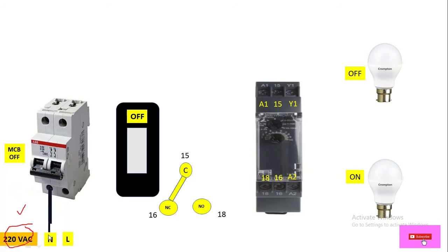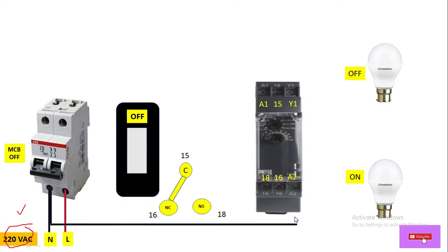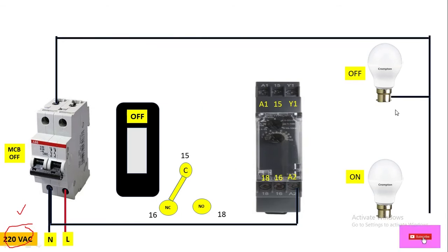From the supply, let's connect neutral to the input terminal of the double-pole MCB, and the live phase terminal is connected to the other input terminal. Now let's complete neutral wiring first. From the MCB output, connect neutral to the A2 terminal of the timer — the black wire is neutral. Also run neutral supply to the two loads, which are AC-operated lamps or LED bulbs.